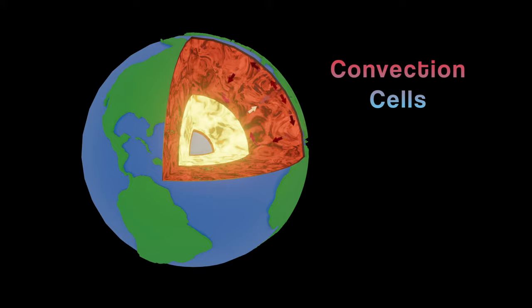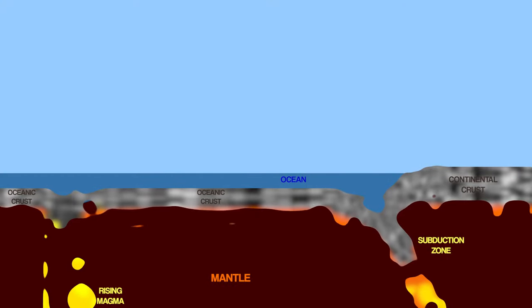Don't let the speed of this diagram fool you, though. These convection cycles take millions of years to complete inside of our planet. We should also talk about the effect this convection has on the crust.